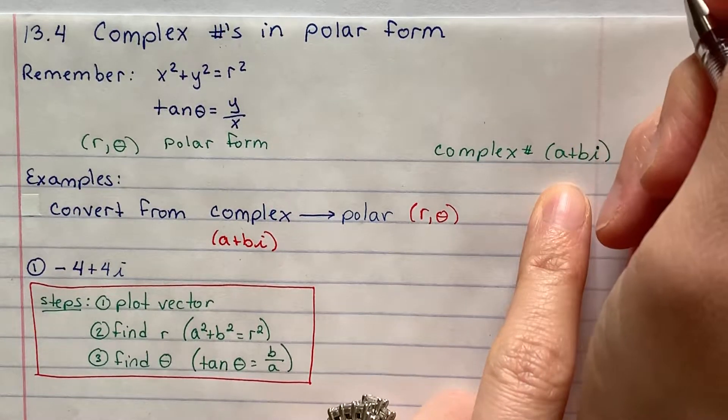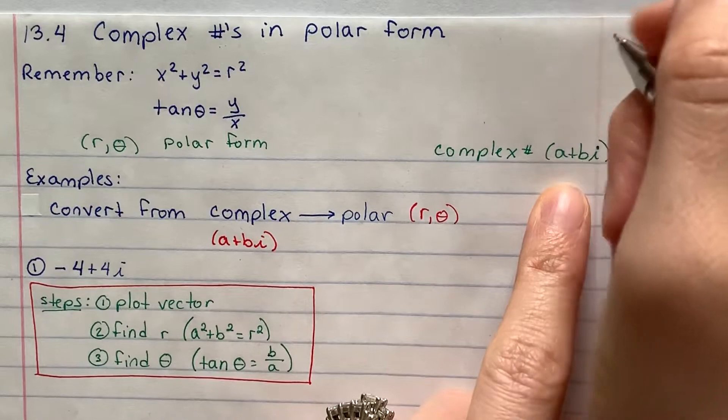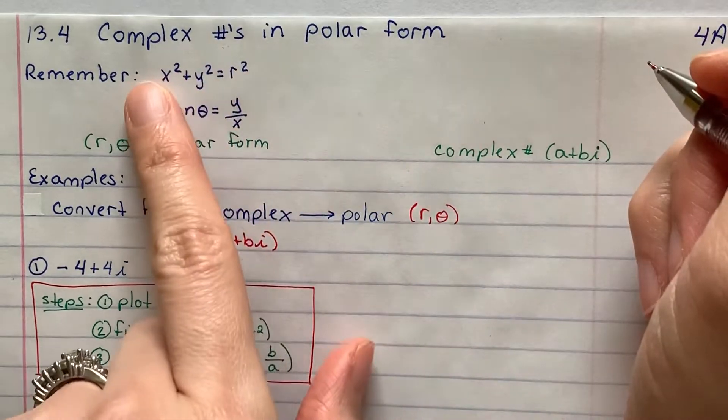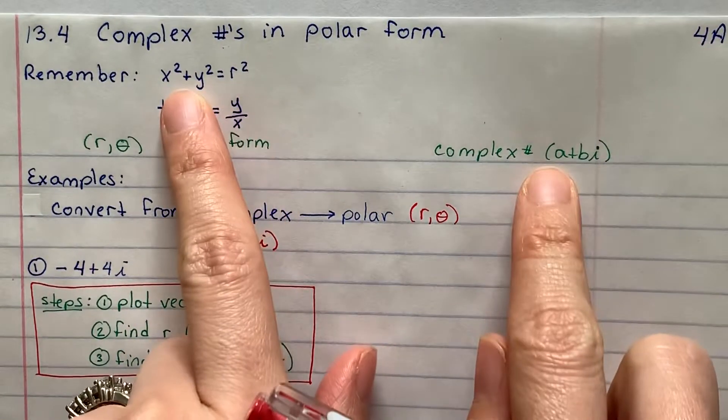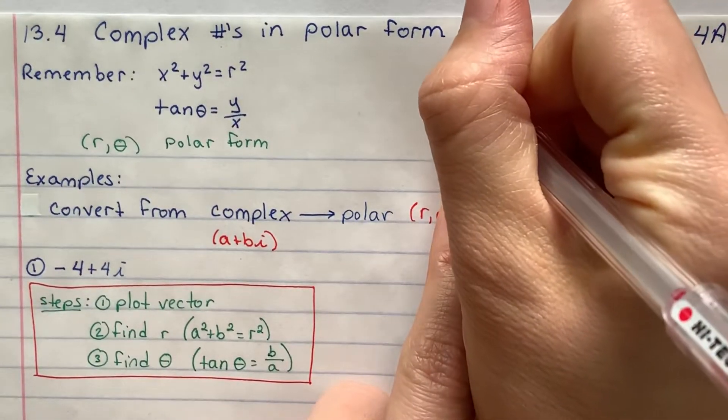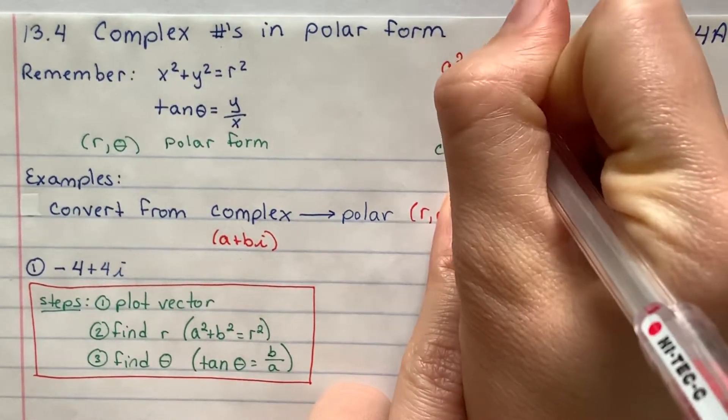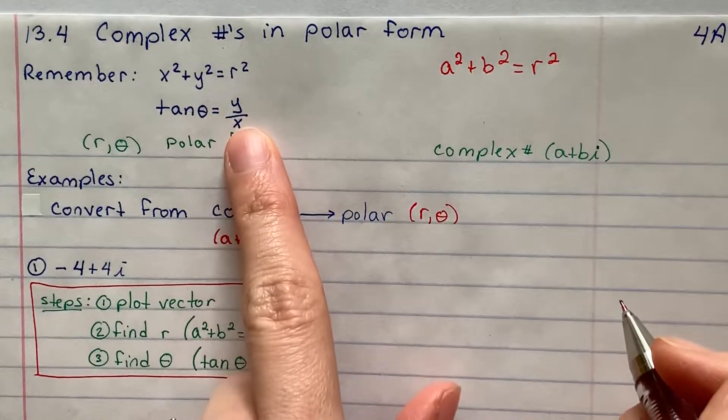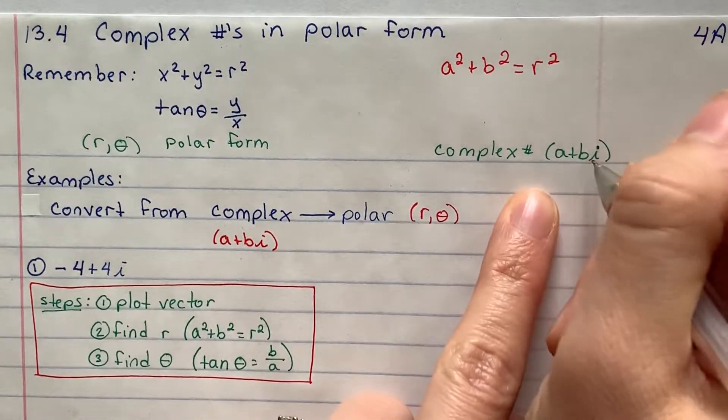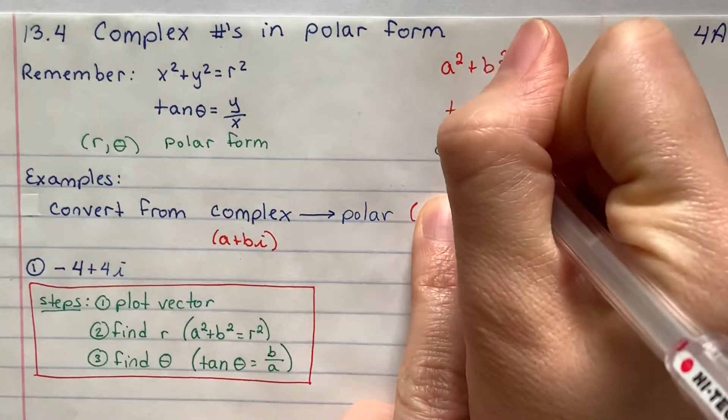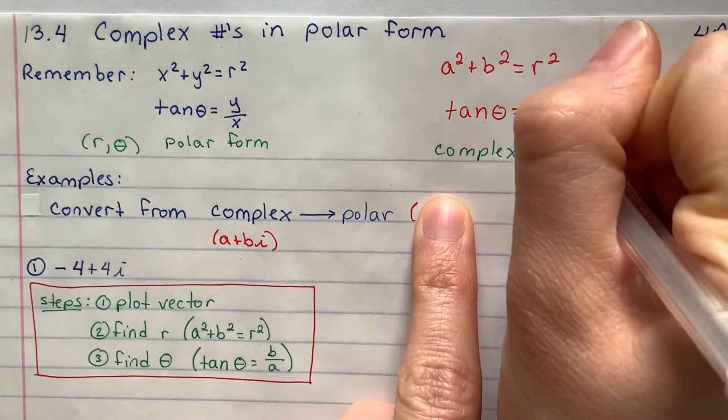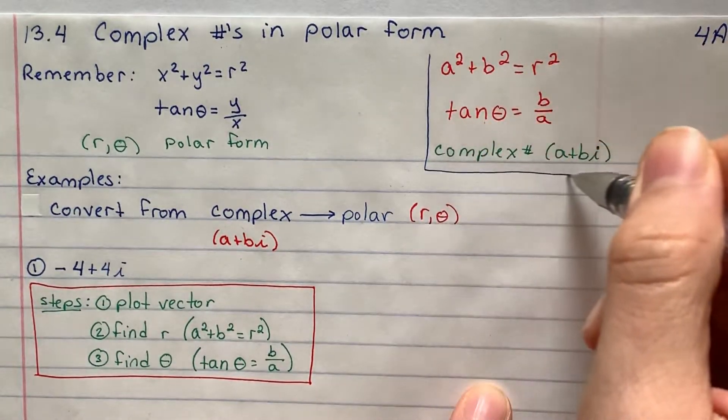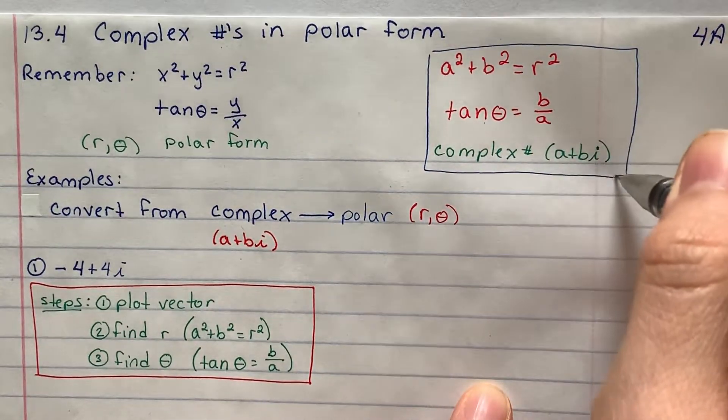In complex form, you have a plus bi. Well, if I have a plus bi, I can use the formula. How can we match this up? It's kind of like this formula x squared plus y squared is equal to r squared, where this could be like your x and your y. So the formula that we're going to be using for this would be a squared plus b squared is equal to r squared. And for tangent theta equals y over x, instead of y and x, I'll use a and b. So I've got tan theta is equal to b over a.